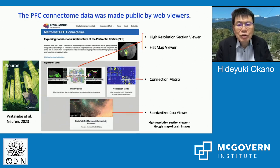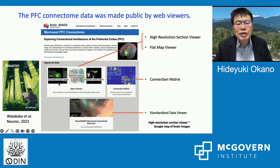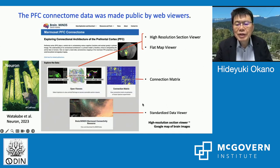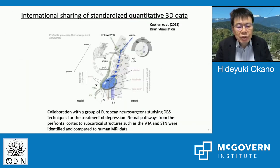We also made the prefrontal cortex connectome data publicly available through web viewers. You can view the data from zoom sections using a high-resolution section viewer and flat-map viewer. We can view the connection matrix, standardized data viewers — essentially a Google Maps-like interface for brain images.